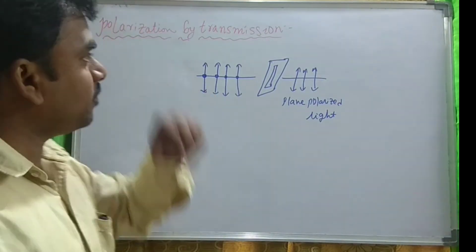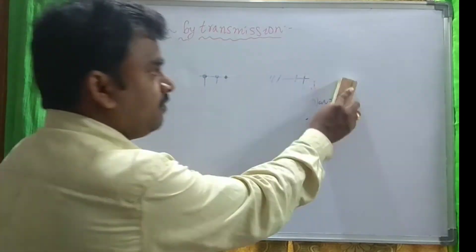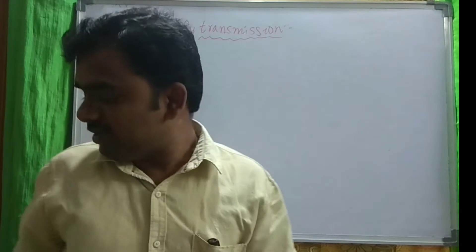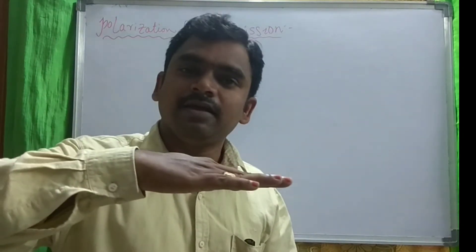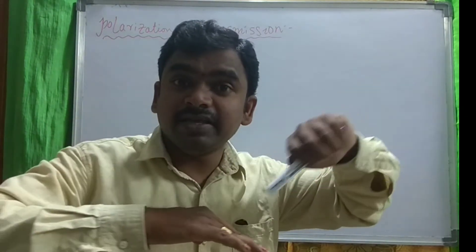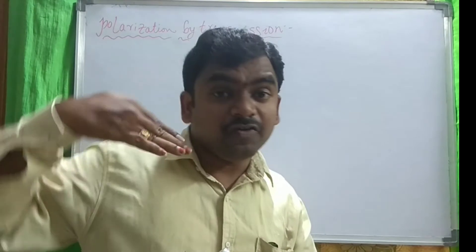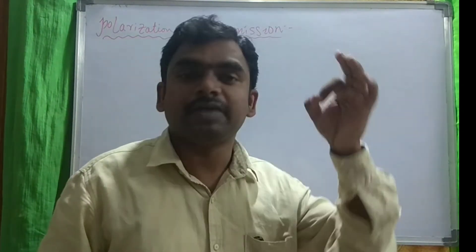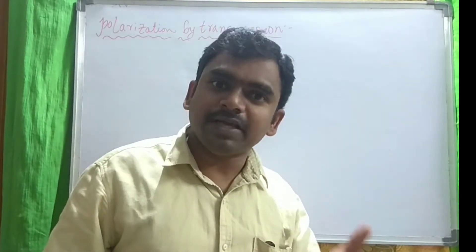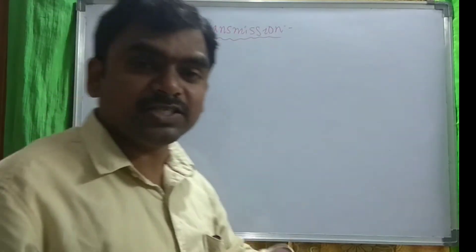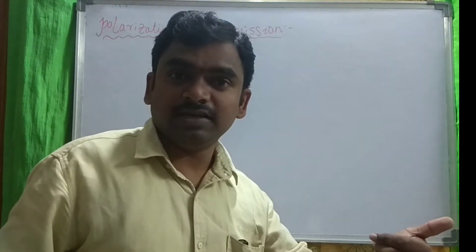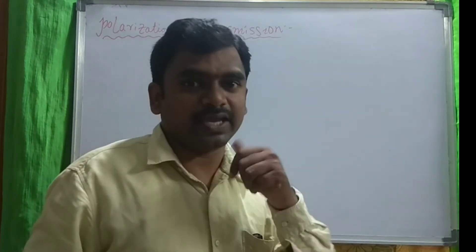So now we are going to discuss about polarization by transmission. In our previous class, we discussed about Brewster's law. What does it tell? Brewster's angle — if we incident the unpolarized light on a plane surface, the reflected beam is partially plane polarized. If we further change the angle of incidence, at a particular angle of incidence, the reflected beam is perfectly plane polarized. Like that, we can obtain plane polarized light. So we discussed about polarization by reflection. Now, polarization by transmission — that means, if the light is passing through slits or glass plates, can we obtain polarized light? Yes, we can.